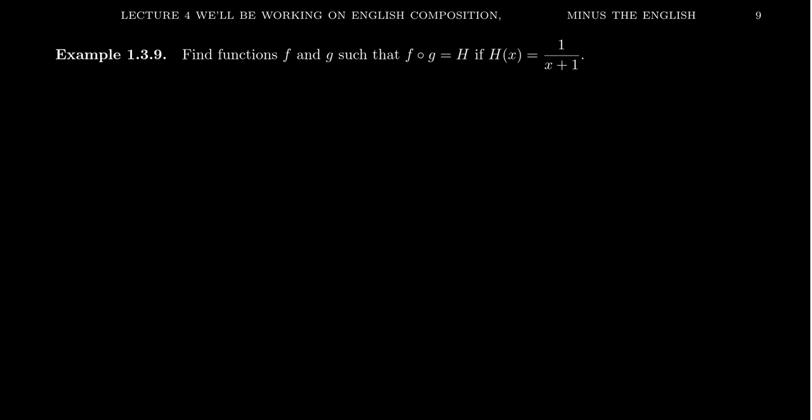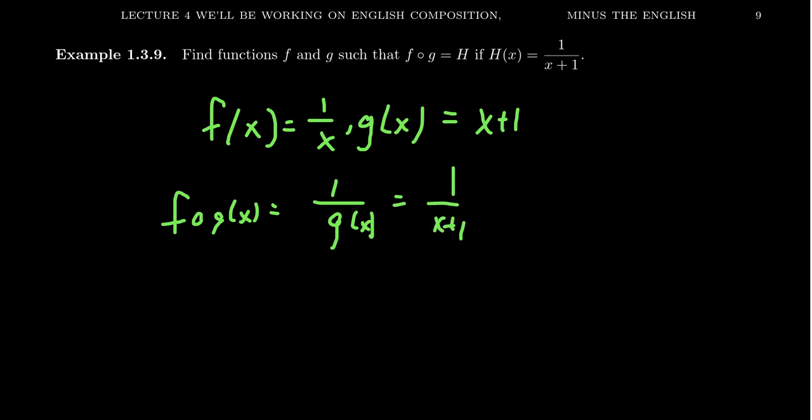Let's look at another example of such a thing here. Let's take the function capital H this time to be 1 over X plus 1. Can we decompose this as two functions F and G? This one might be a little bit more funky, but again, there's more than one way of doing this. We could take F of X to be 1 over X, and we could take G of X to be X plus 1. And notice when you put these functions back together, F of G of X, this will be 1 over G of X, where G of X is X plus 1. And so this is exactly capital H of X here.